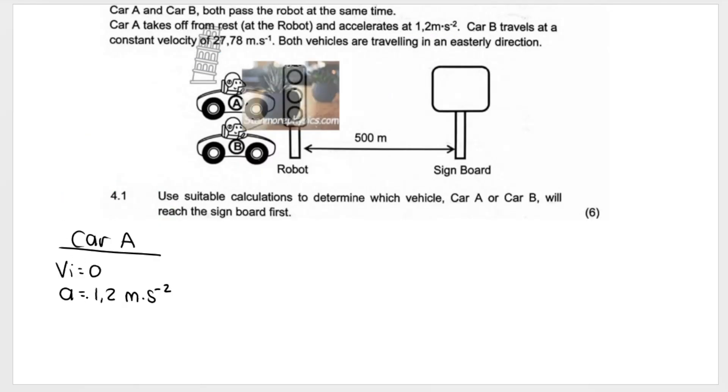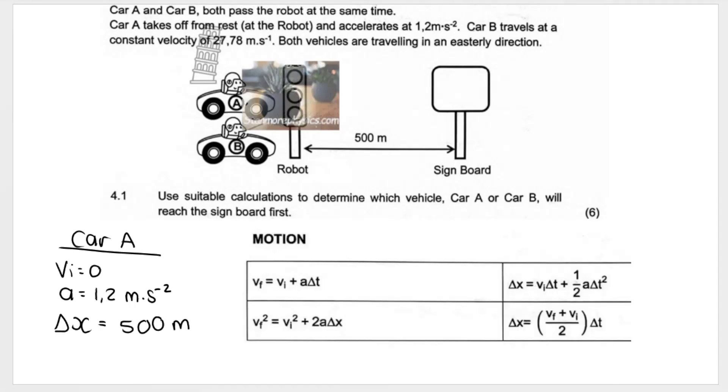What we know about Car A is the initial velocity, it starts from rest, we know acceleration, and we also know the displacement or the distance that it travels is 500 meters. So it is very important to always list your variables first, list what you know, and then list what you are looking for. I'm looking for time.